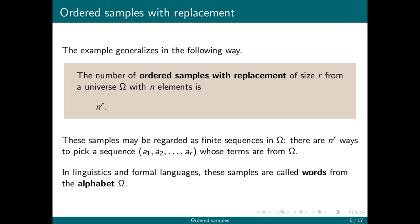In linguistics and formal languages, we also call these samples words from the alphabet omega. So in theoretical computer science, you start to think about what a computer language truly is. And formal languages is the branch of computer science where you do that.